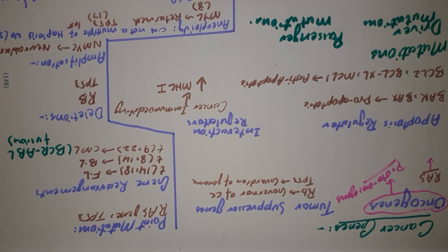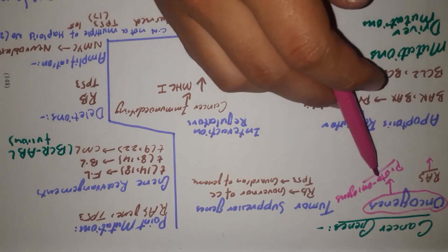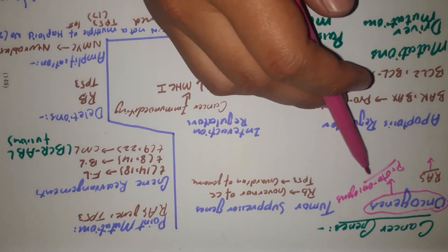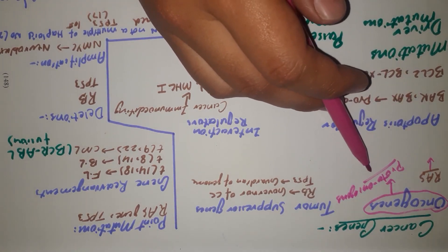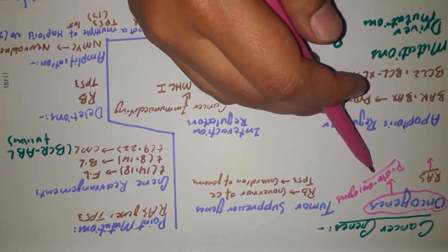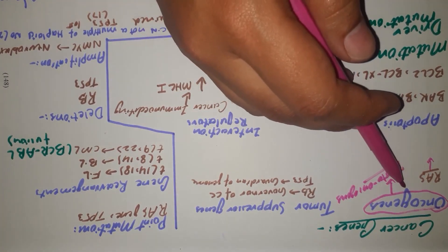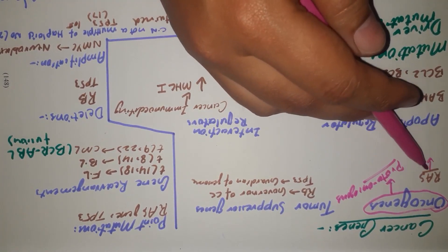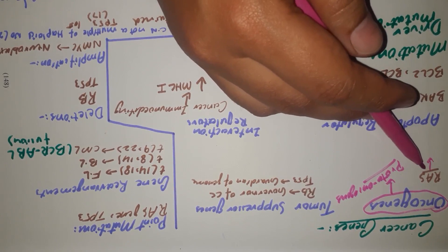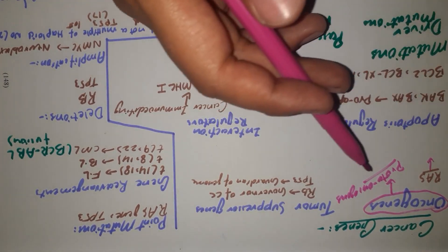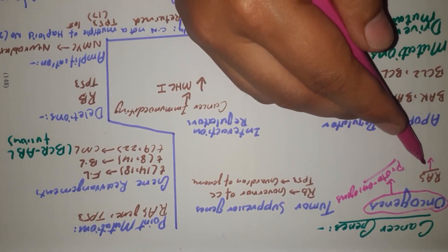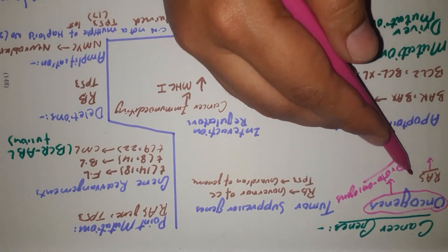Oncogenes are mostly genes involved in increasing cellular production or increasing the rate of the cell cycle, and they are derived from proto-oncogenes. Proto-oncogenes are the normal genes regulating the cell cycle. When they get mutated, they get converted to oncogenes. A common example is the RAS pathway, which we will study later on. When this pathway gets amplified, it leads to the production of tumors.